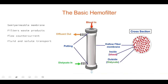Let's take a look at the hemofilter — probably the most important part of the CRRT machine. It filters waste products by creating a semi-permeable membrane between the dialysate and the blood. If you take a cross-sectional view of the hemofilter, you'll see what looks like little straws filled with blood, surrounded by dialysate solution. Within the permeable membrane of those straws is where the exchange of waste products and electrolytes takes place, through diffusion and hemofiltration.